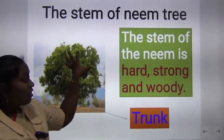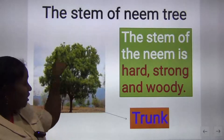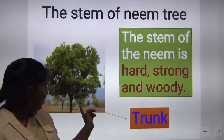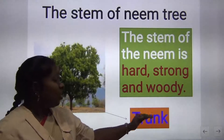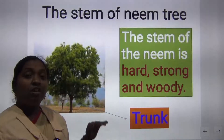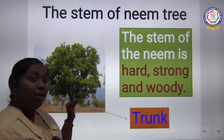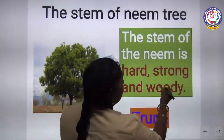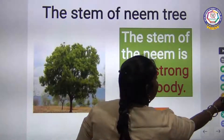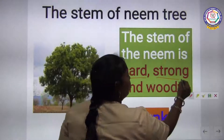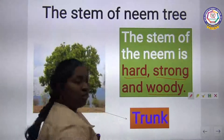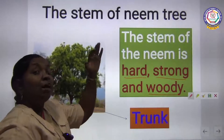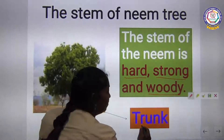Look at this picture of the stem of a neem tree. The stem of a tree is called a trunk. You cannot call it just a stem when it becomes a tree — you have to call it a trunk. Why? Because it is hard, strong, and woody. This is the appearance it will have when it becomes a big tree, and that is why we call it a trunk.